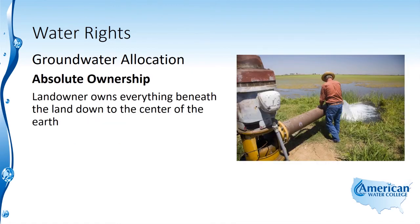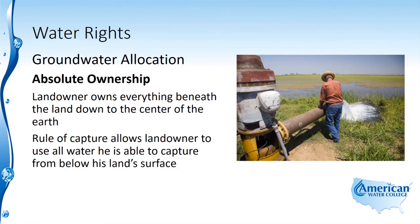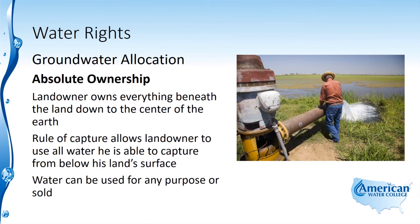Under absolute ownership, the landowner owns everything beneath the land down to the center of the earth. The rule of capture allows the landowner to use all the water they're capable of capturing from below their land surface, and it can be used for any purpose or even sold. There is no liability for lowering the water table under the absolute ownership doctrine.